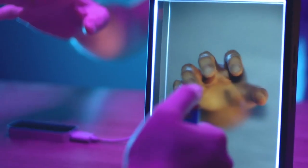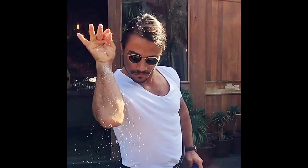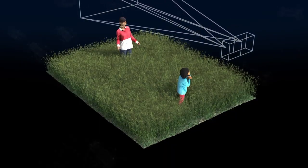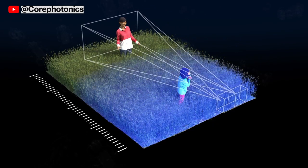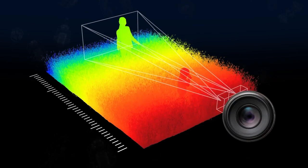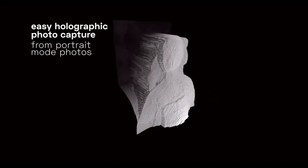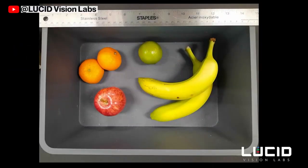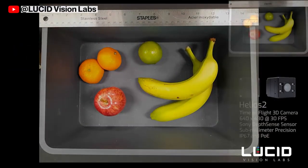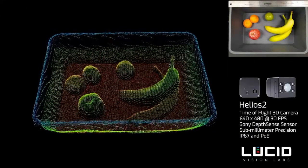First things first: what is a depth map? Depth maps are like the secret ingredient that adds that extra dimension to our virtual experiences. They contain information about the distances of objects from a specific perspective or reference point, like a camera lens. Each pixel is assigned a value to represent the distance of that pixel from the reference point, which creates a 3D representation of the scene for its RGB image or virtual scene.